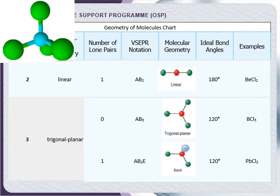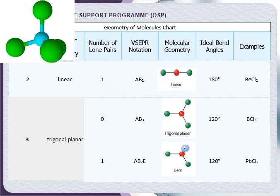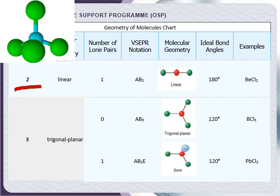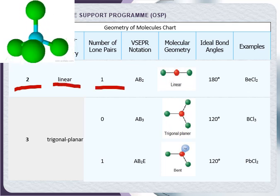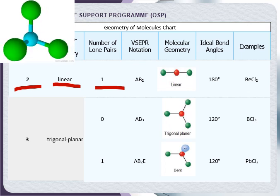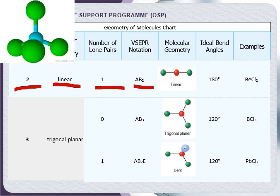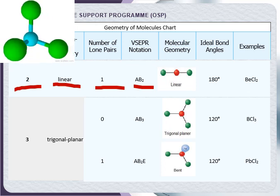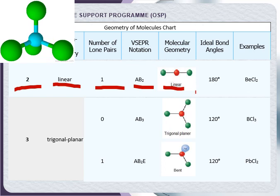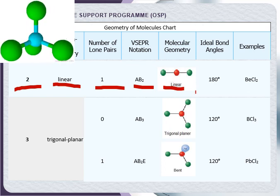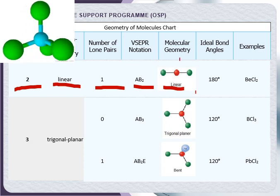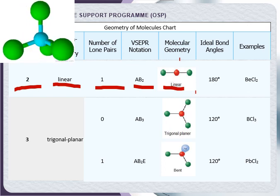Here is a chart showing how many electron pairs are present in a molecule, the expected geometry, the number of lone pairs, and the molecular geometry. The central atom is represented as 'A' while bonded atoms are represented as 'B'. The molecular geometry and bond angles are also given, along with examples of molecules.